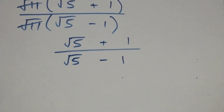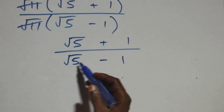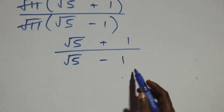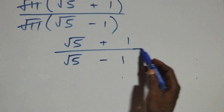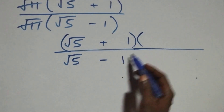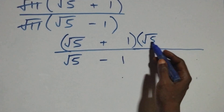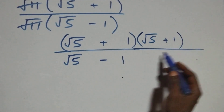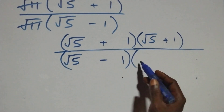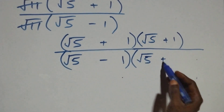Next, we rationalize this — we multiply the numerator and denominator by the conjugate of the denominator. We multiply by the conjugate, which is root five plus one, and also multiply the denominator by the same conjugate: root five plus one.